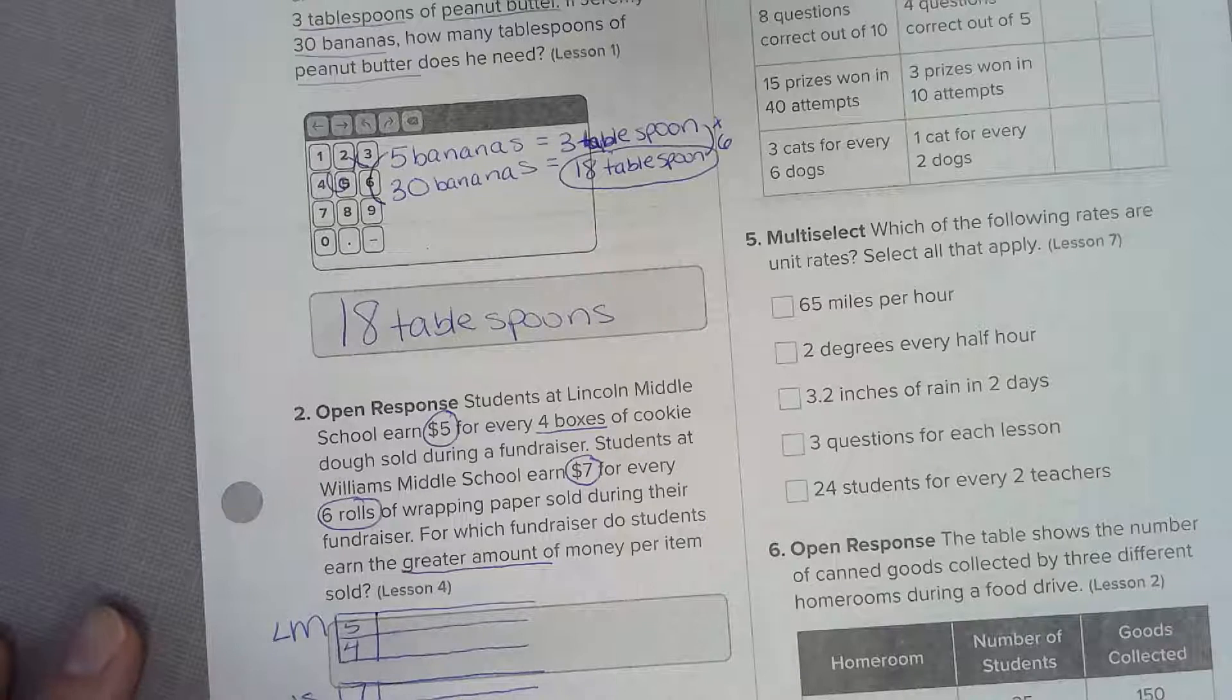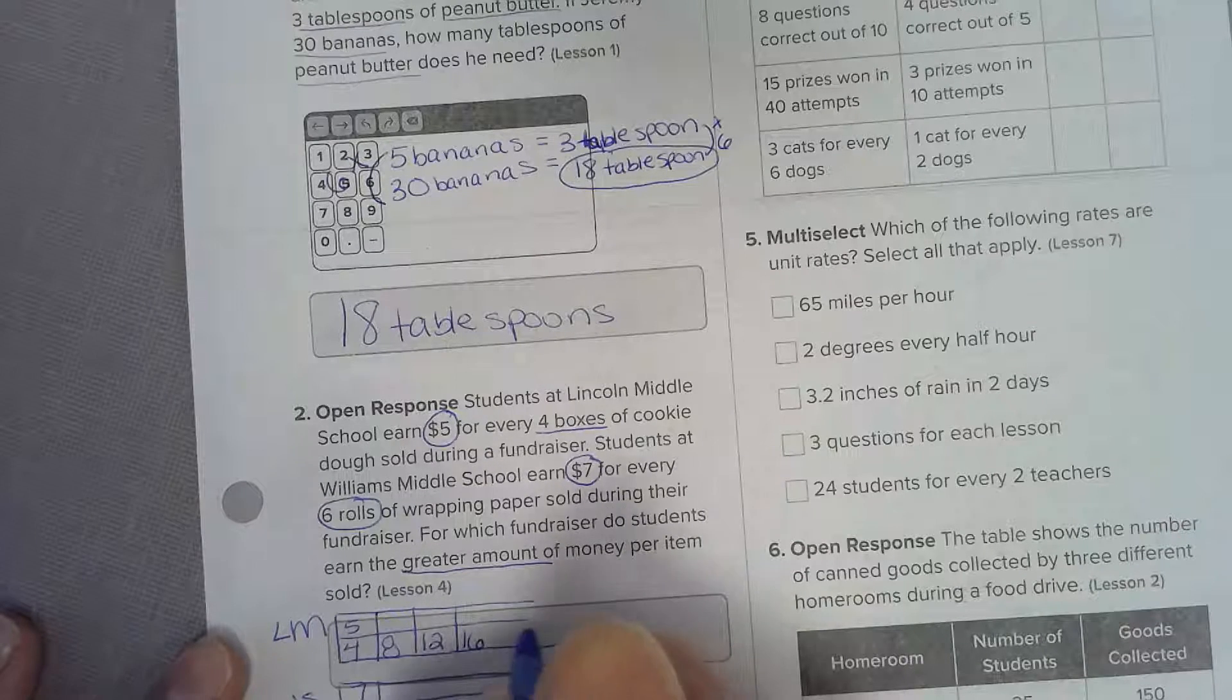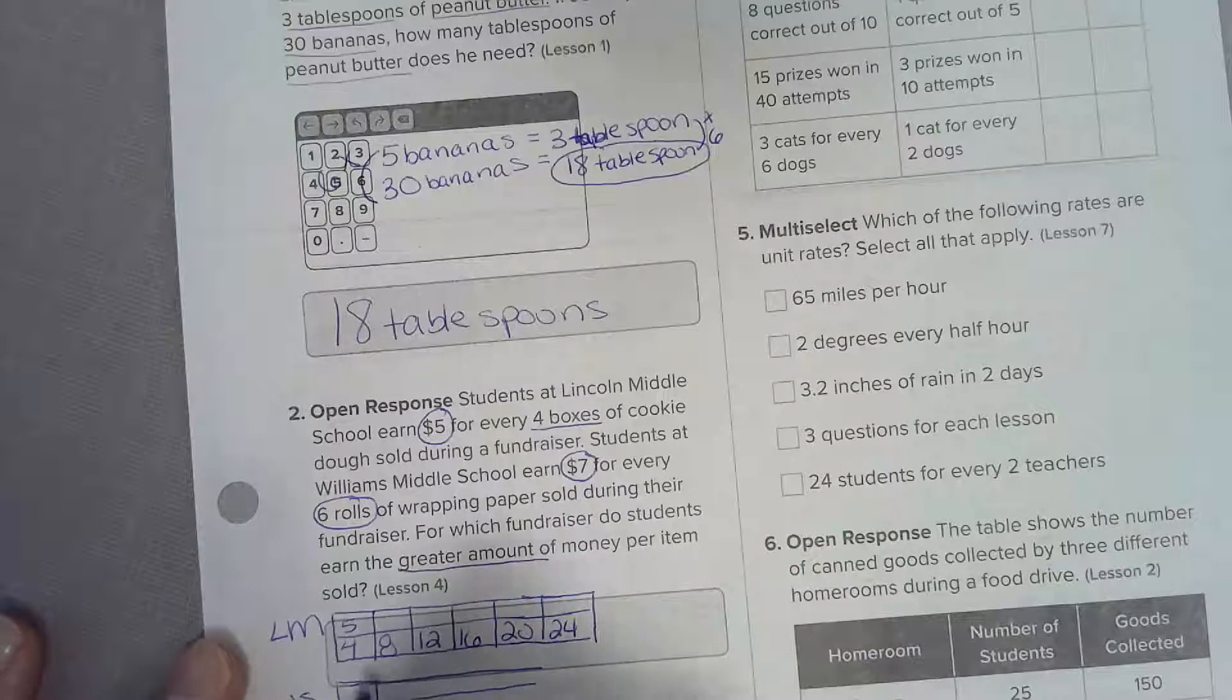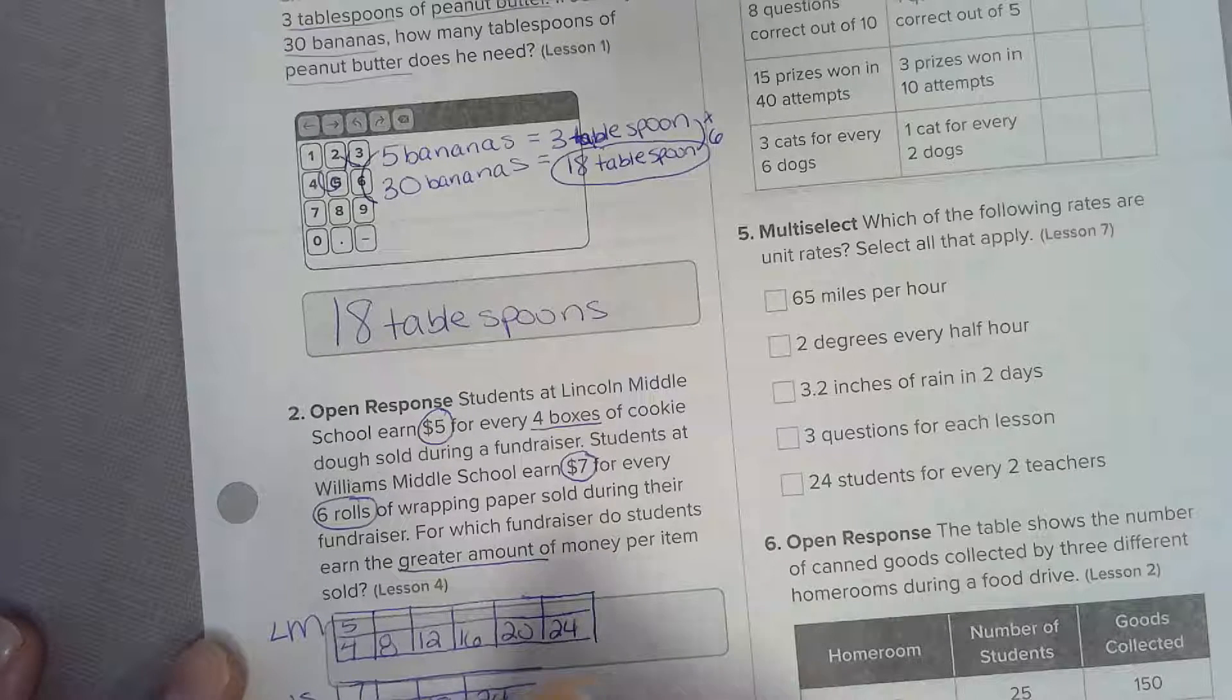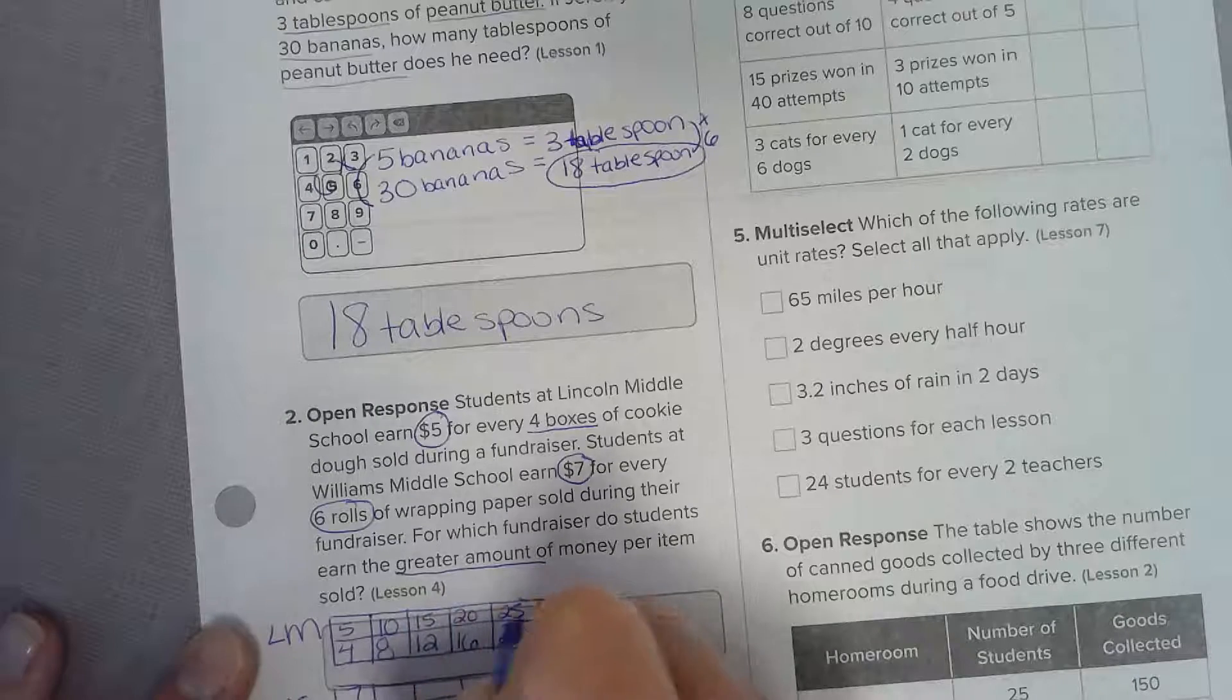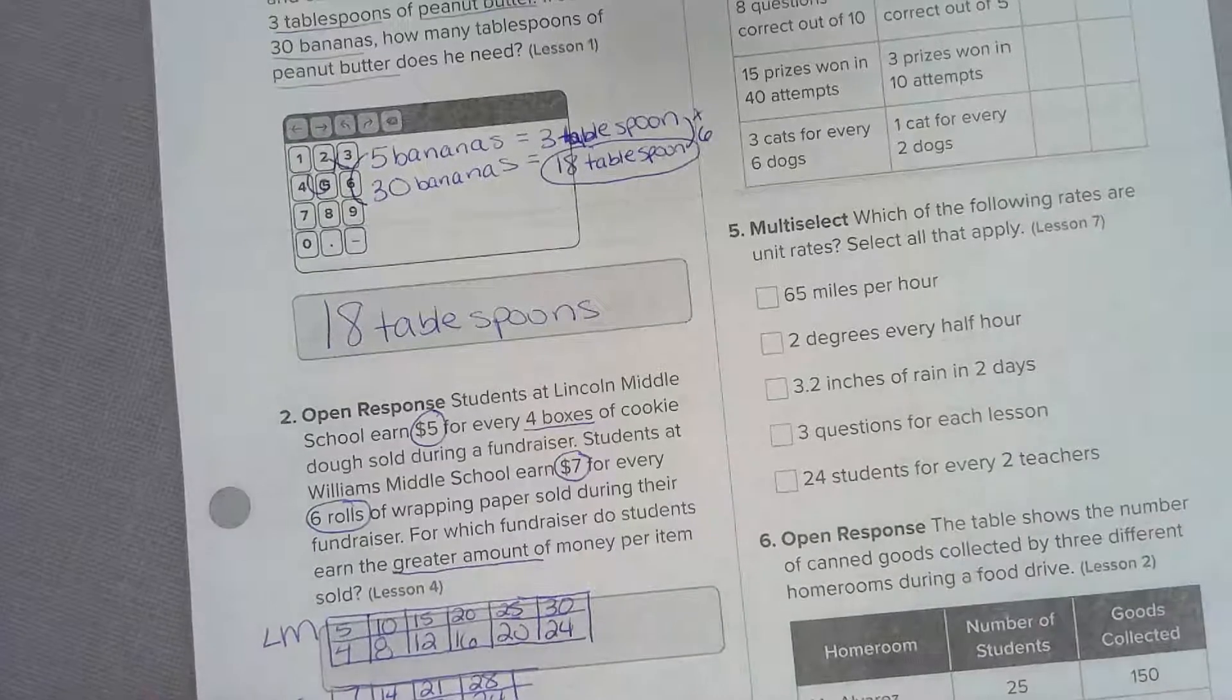We need to count inside our boxes until we have an equal amount of product sold, then we can compare the amount of money. Our product has to equal the same amount. Let's start counting: four, eight, twelve, sixteen, twenty, twenty four. When I count by sixes: six, twelve, eighteen, twenty four - that's when they're the same. Let's count by our top number.